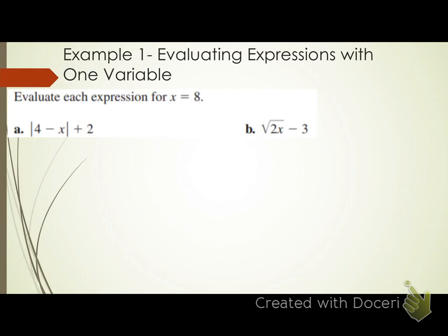Evaluate each expression for x equals 8. So I've got the expression on letter A and the expression on letter B. Letter A is the absolute value of 4 minus x, plus 2. Does anyone have any idea how I would evaluate that expression for x equals 8? The very first thing I need to do is plug 8 in for my variable x, because that's what it's telling me x equals.